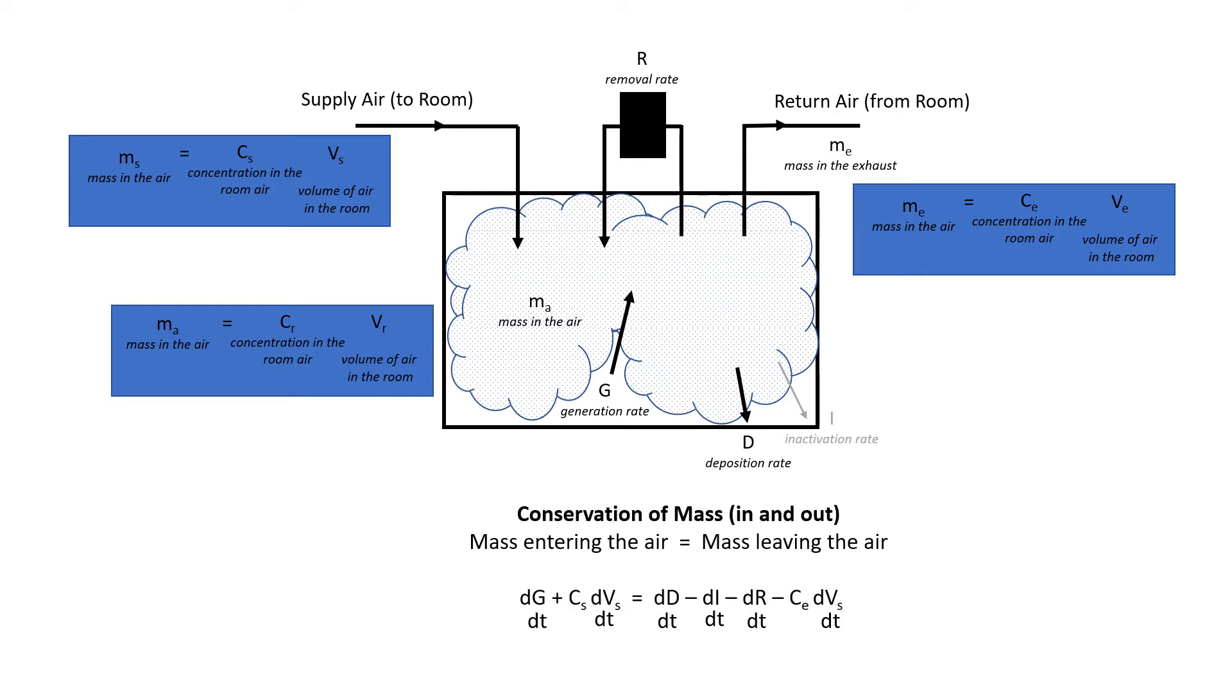What we're usually doing, though, is we're looking at mass flow rates into and out of the room in order to determine those concentrations. And so we're looking at generation rate as a function of time, the supply air, contaminants coming in the supply air as a function of time, deposition as a function of time, inactivation as a function of time, removal as a function of time, and exhaust air removal as a function of time. So those are all based on a function of time.